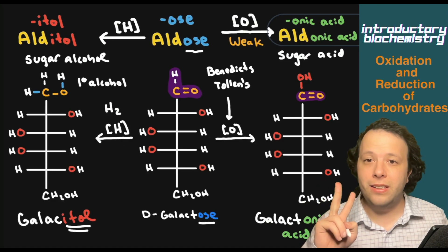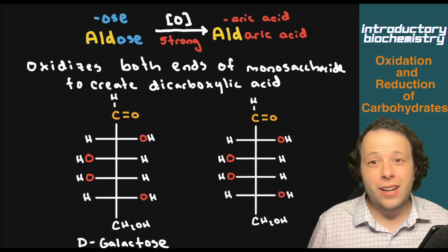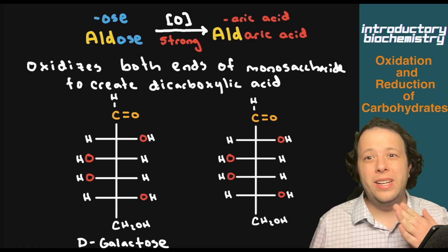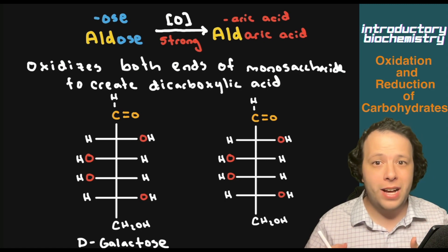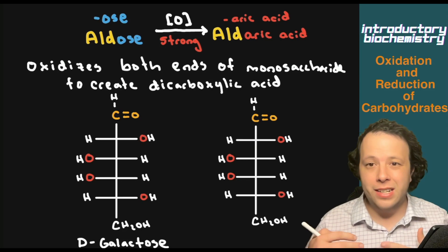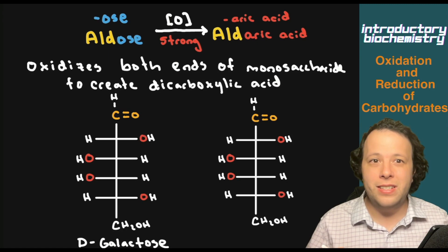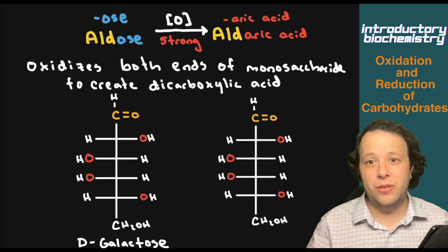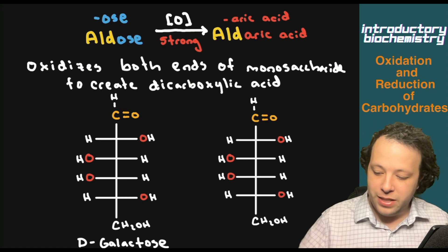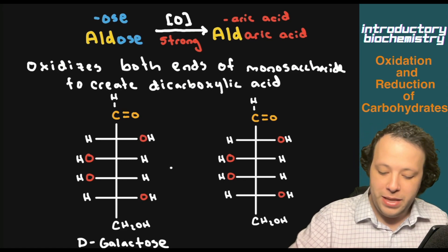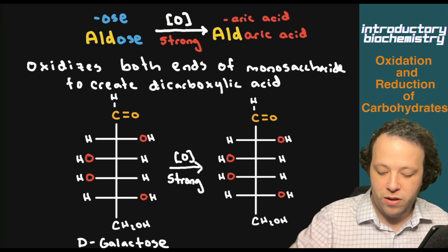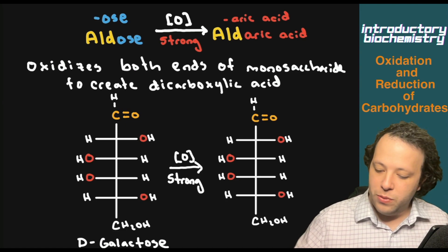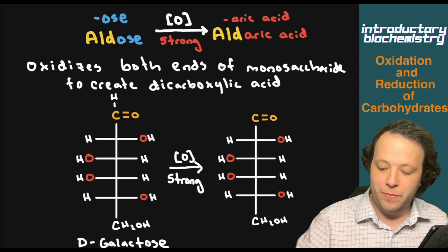The other oxidation reaction you can have is between weak and strong. In organic and biochemistry, depending on what reagents you're adding, you can specify the difference in how you're conducting an experiment. If you have strong oxidation, it's going to oxidize two different points on your molecule. The first place it's going to oxidize is going to be the same idea as before, where we add a carboxylic acid on the very top.